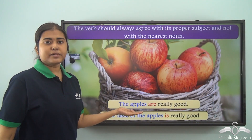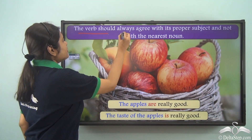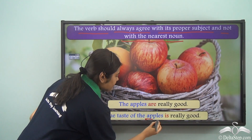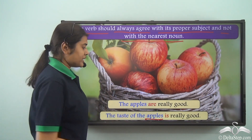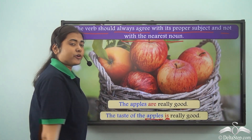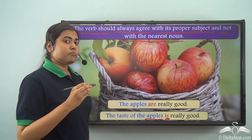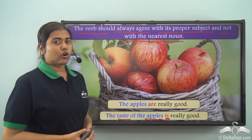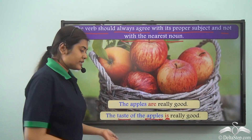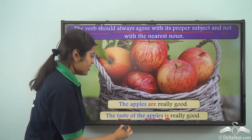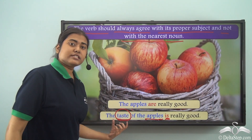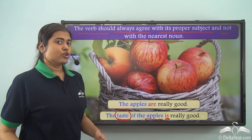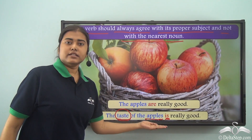But if it was simply 'the apples,' then we use 'are.' So we should remember that the verb should always agree with its proper subject and not with the nearest noun. Just because we have the noun 'apples' before the verb does not mean the verb will be decided based on the number of this noun. We need to understand which is the main noun of the subject and accordingly decide whether we are using a singular or a plural verb. In this case, we are more concerned about the taste — the taste is really good. Whereas the main focus of 'the apples' is the apples are really good.